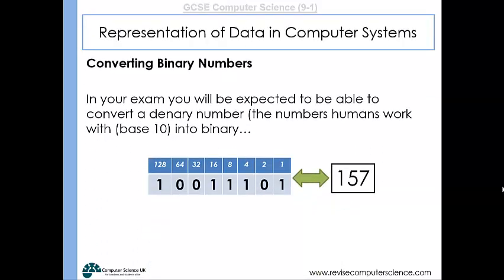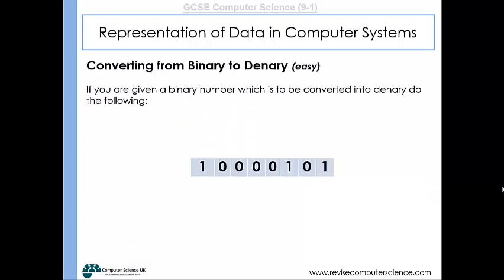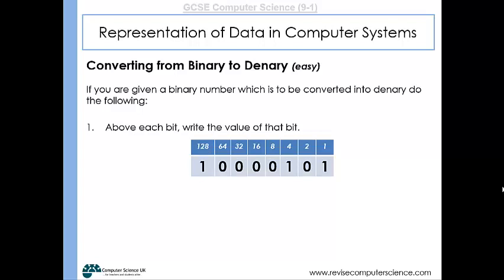First of all, let's have a look at how we can go from a binary number into denary — in other words, work out the denary value of a binary number. If we're given a binary number, all we need to do is put the value of the bit in each column at the top. From the right-hand side going left: the first column represents how many ones, then twos, fours, eights, 16s, all the way to 128s.